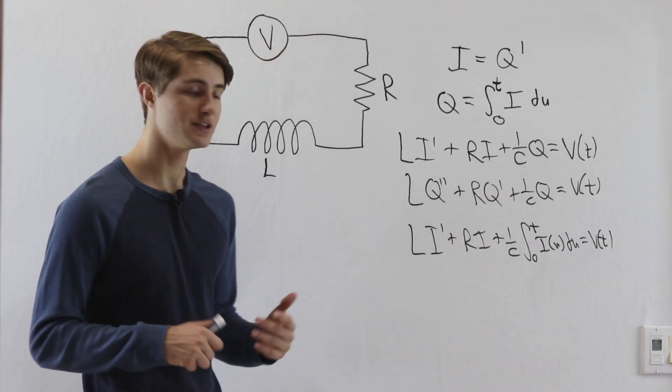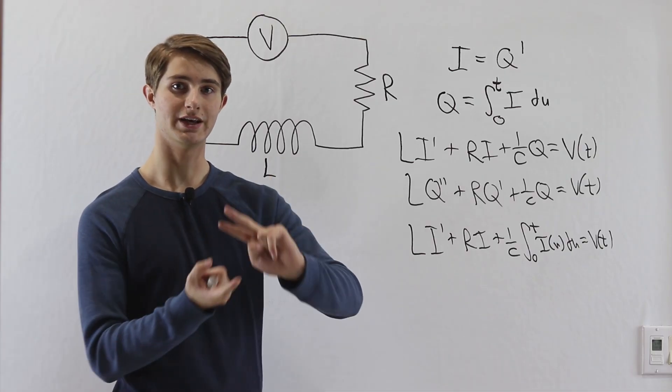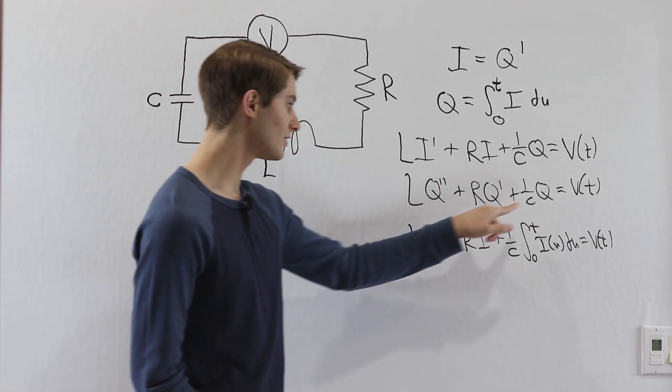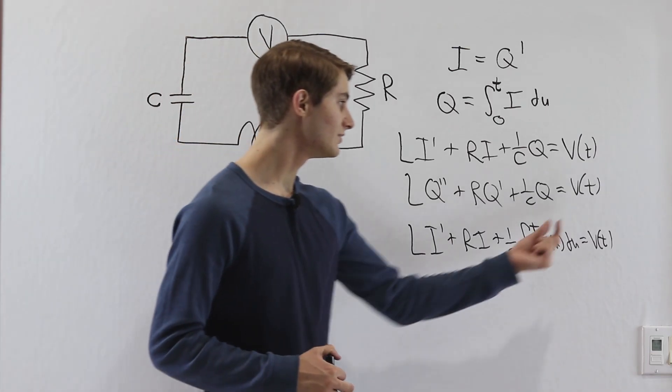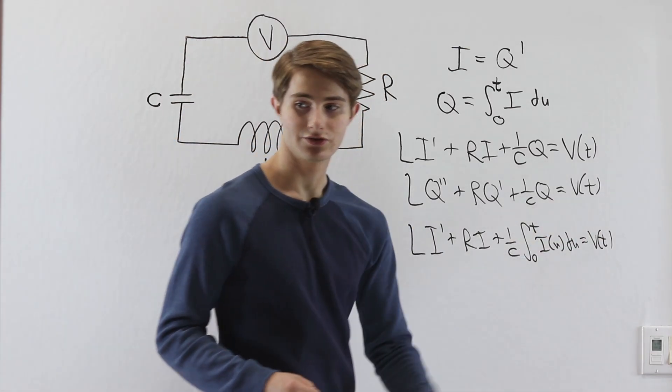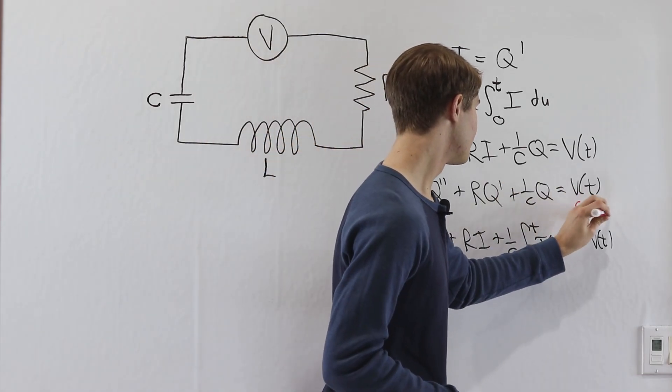So two potential methods we might use to solve this differential equation are undetermined coefficients and Laplace transforms. Remember that because L, R, and C are constants, we can look at undetermined coefficients and say if V of T is, for example, equal to cosine of T,